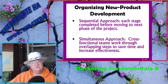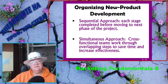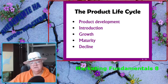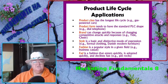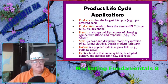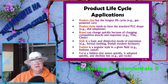The product life cycle consists of product development, introduction, growth, maturity, and decline. Product life cycle applications are important. The product class has the longest life cycle, like gas-powered cars. The product form tends to have the standard product life cycle shape, like the dial telephone. A brand can change quickly because of changing competitive attacks and responses, like Tide and Cheer.